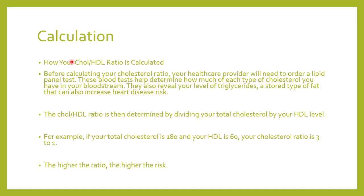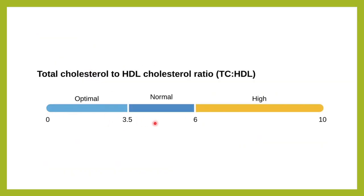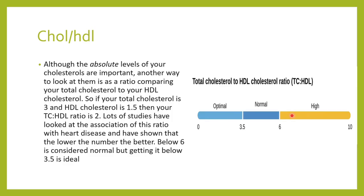To calculate this ratio, we take the total cholesterol value and divide it by the HDL value from the lab results. For example, if total cholesterol is 180 and HDL is 60, the ratio is 3:1. The higher the ratio, the higher your risk. A ratio below 3.5 is considered optimal. If it rises above 6, it is considered a significant risk for heart disease.